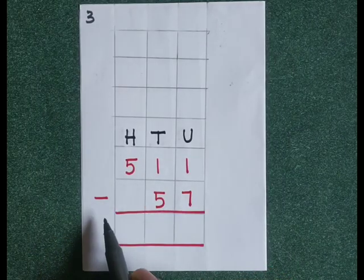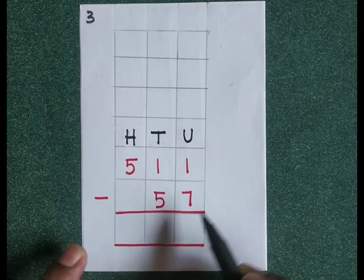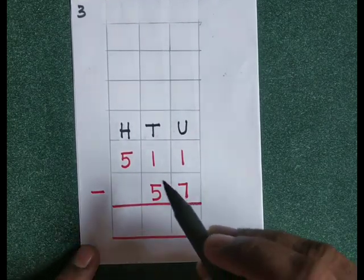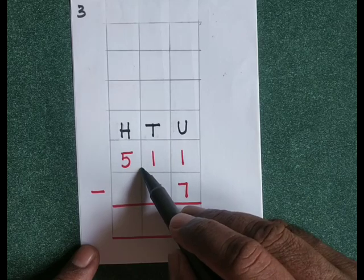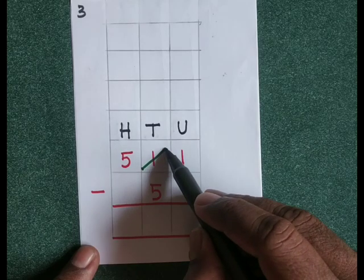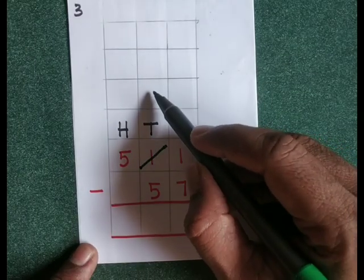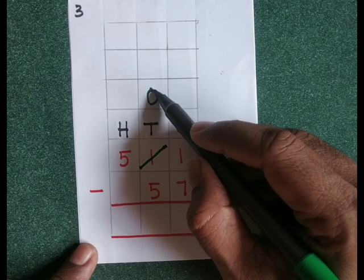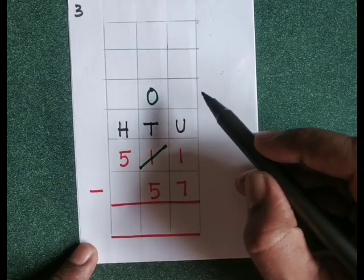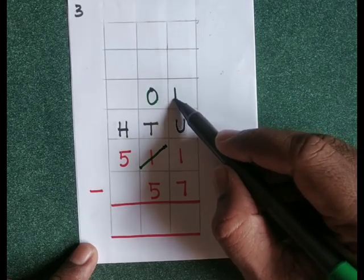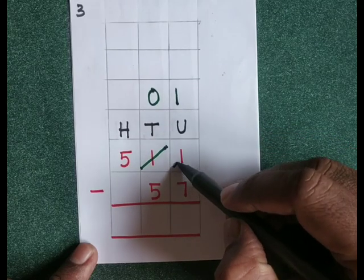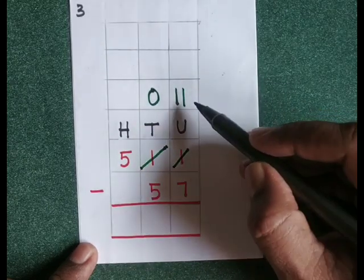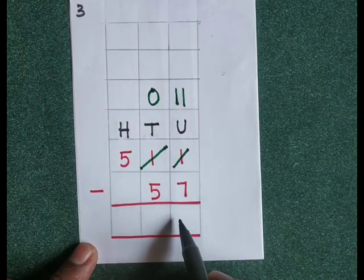511 minus 57. 1 minus 7 — we can't do that, so we will borrow from the tens place. There is 1 ten; if you borrow 1 ten from that 1 ten, 0 tens will be left here. That 1 ten means 10 units, plus 1 unit gives us 11 units. 11 minus 7 is 4.